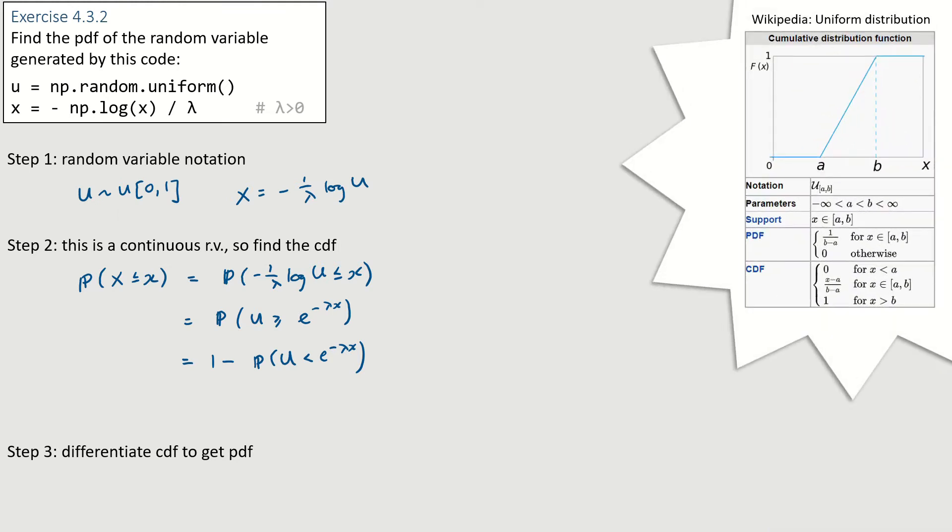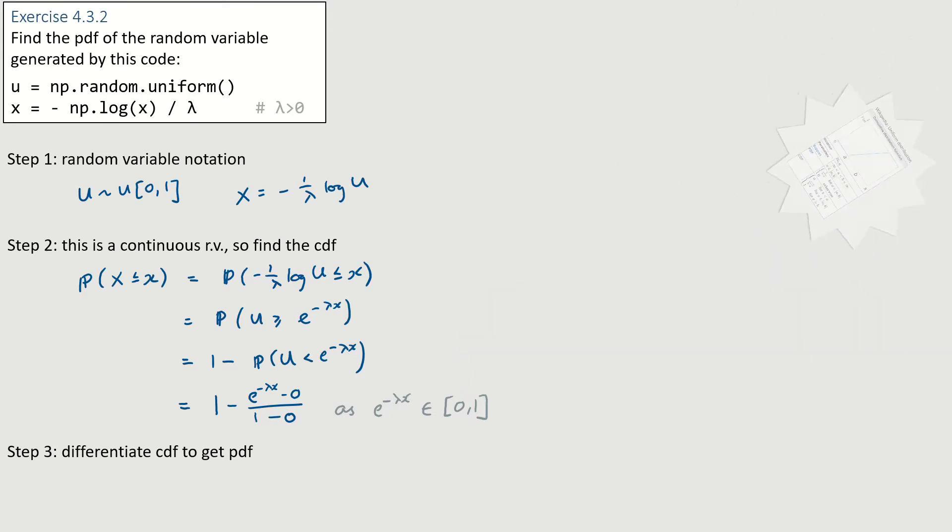I just look up Wikipedia to remind myself about the CDF for a uniform random variable. And this is the expression we get, just copying down from Wikipedia. The Wikipedia formula has a and b, and in my case a equals 0 and b equals 1. Also, the value at which I want the CDF is e to the minus lambda x, and the question told me lambda is above 0, so I know this value is in the range 0 to 1, so it's the middle case that I want. And simplify.